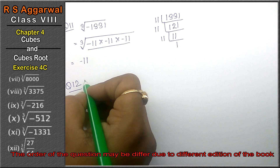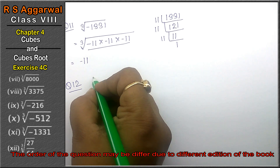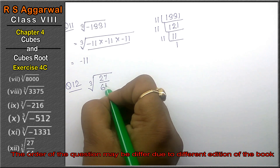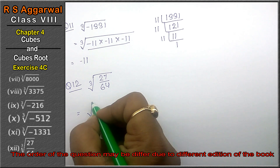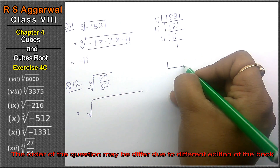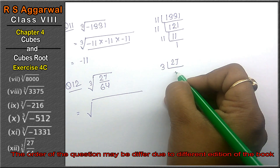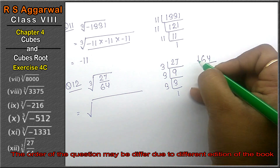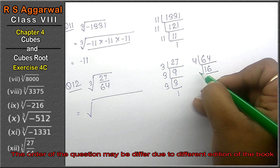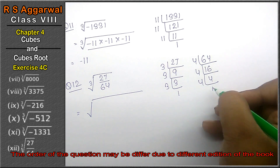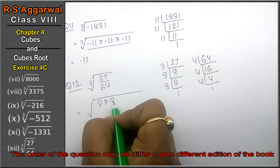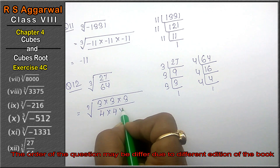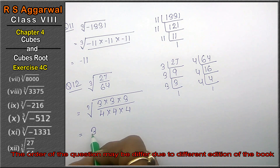Let's do question number 12 of Exercise 4C. Question number 12 is cube root of 27 upon 64. We find the cubes of the numerator and denominator separately. 27 = 3×3×3 and 64 = 4×4×4. Writing: 3×3×3 over 4×4×4. Making pairs of 3, one 3 and one 4 come out, so the answer is 3 upon 4.